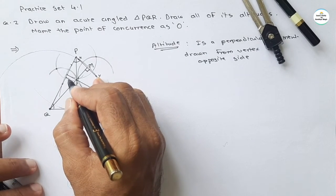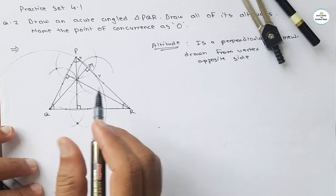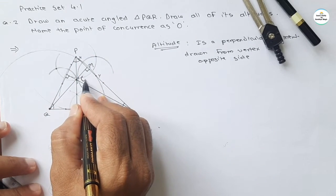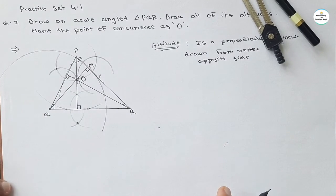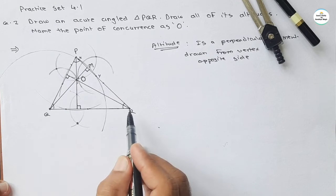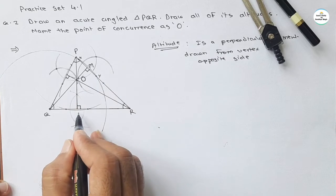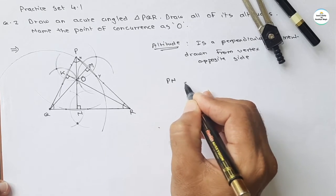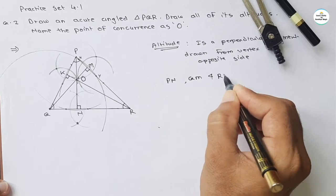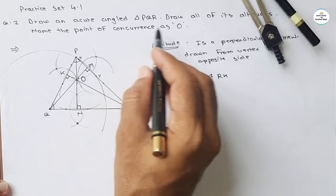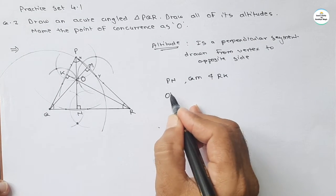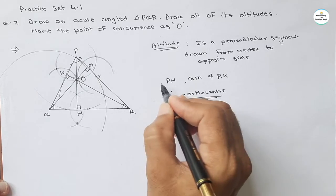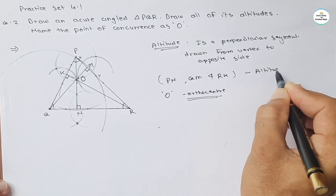Now we have drawn all three altitudes, and they are concurrent — meeting at one point. As asked, name the point of concurrence as O. So this point is O. We have drawn three altitudes: from P, from Q, and from R. Let's name the feet as M, N, and K. So the altitudes are PN, QM, and RK. Point O is the orthocenter.